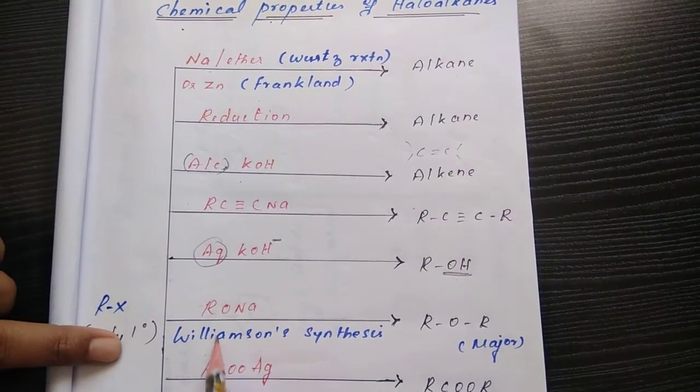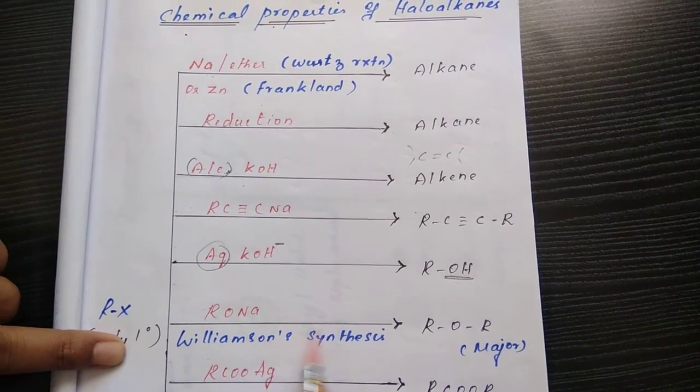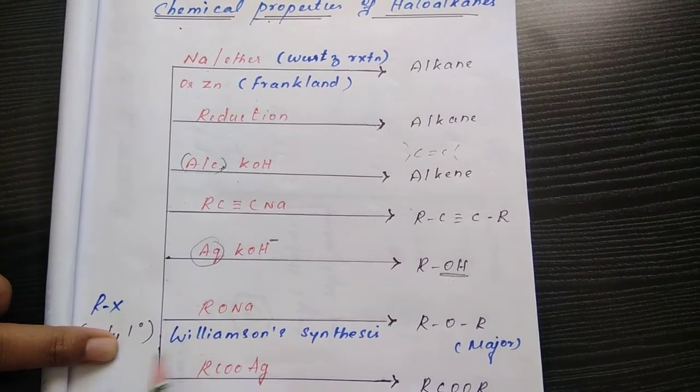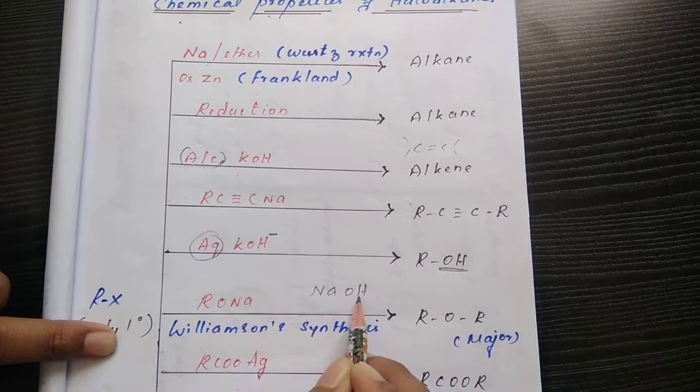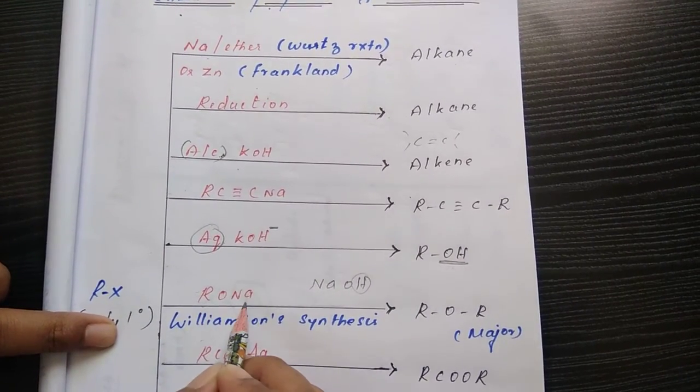The next most important reaction is Williamson synthesis. Here we are using the preparation of ethers. If sodium alkoxides undergo reaction - generally sodium OH means sodium hydroxide, but here instead of hydrogen we have R group, so this is sodium alkoxide.